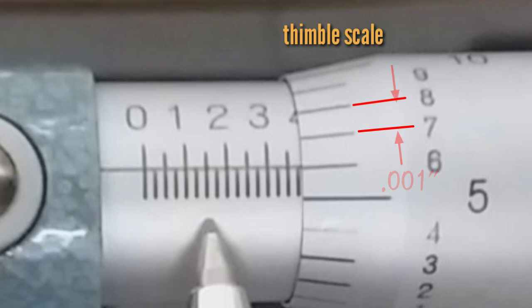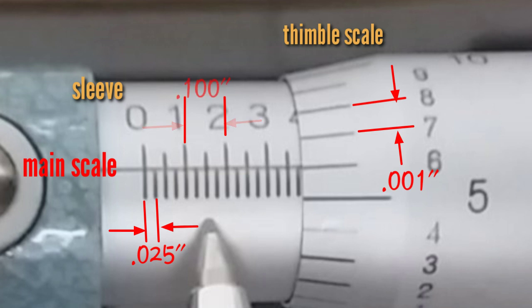The sleeve graduation is 25 thousandths of an inch, and the upper side of the main scale is 100 thousandths of an inch.